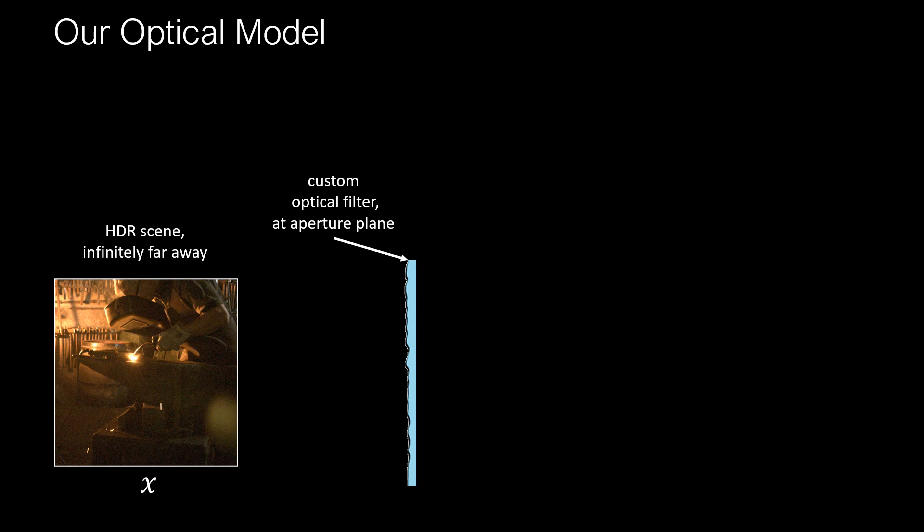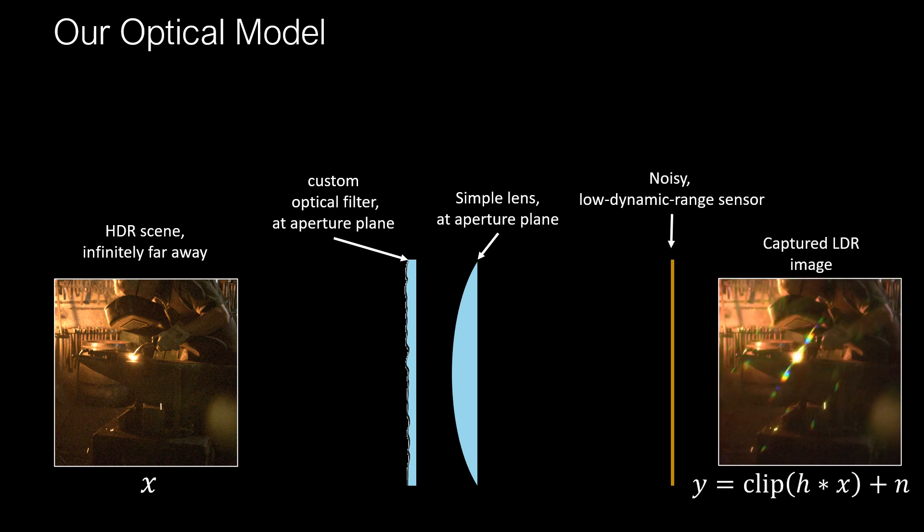The first step in designing an optical filter with end-to-end learning is to model the optical system. We first model a high-dynamic range scene located infinitely far away from our sensor. Light from the scene propagates to a custom optical filter at the aperture plane of our camera — this is what we optimize. Light is modulated by the filter and then interacts with a simple lens, also at the aperture plane, before propagating to the sensor, which records a clipped and noisy version of its intensity.